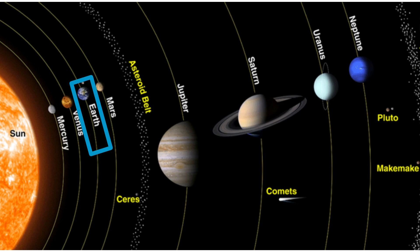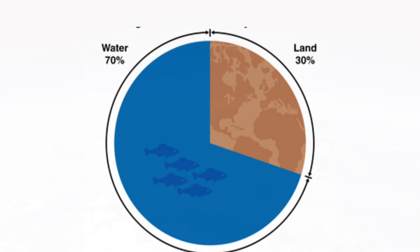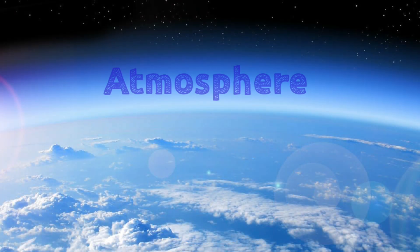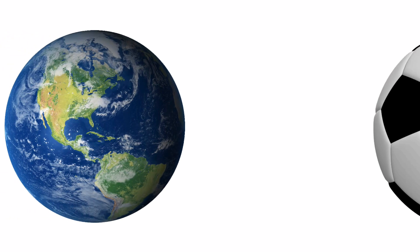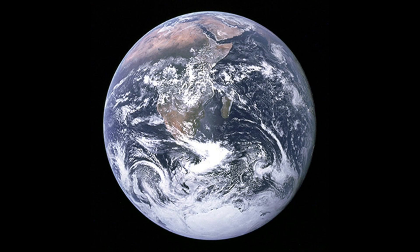Earth's surface is covered with three-fourths of water. There is a layer of air which surrounds Earth called the atmosphere. Earth is round like a ball, as it is proved by certain observations.